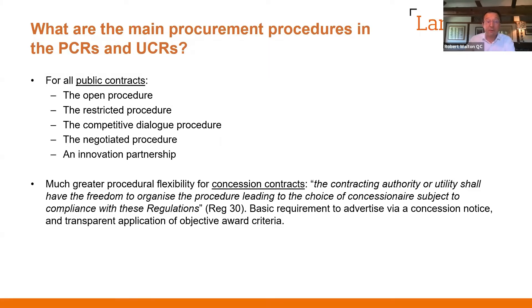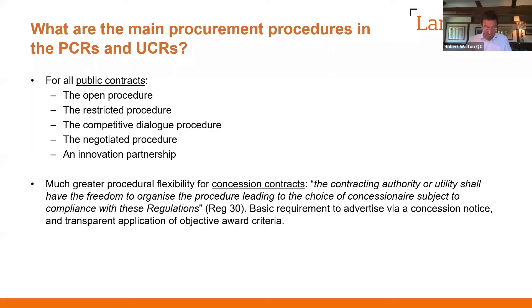What are the main procedures? For all public contracts we have the open procedure — typically used where the supply of goods is at issue and cost is the defining criterion. The restricted procedure allows you to front-load the process by applying criteria as to those entitled to bid. The competitive dialogue procedure, negotiated procedure and innovative partnership are all subject to limitations. There is much greater procedural flexibility for concession contracts — the contracting authority or utility shall have the freedom to organise the procedure, subject to compliance with the regulations, with the basic requirement being advertisement via a concession notice and transparent application of objective award criteria.